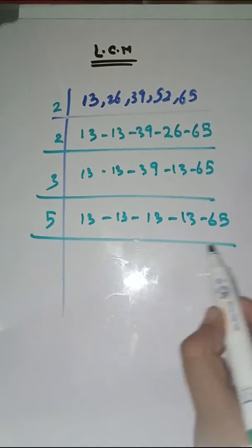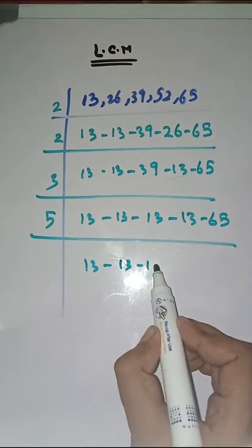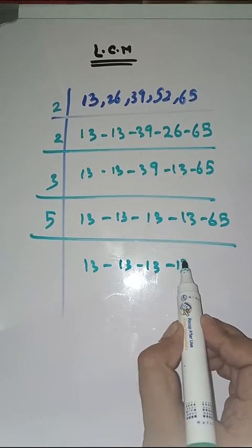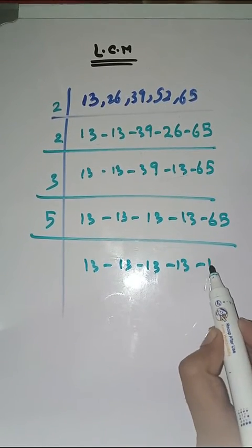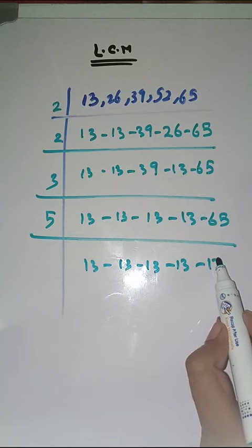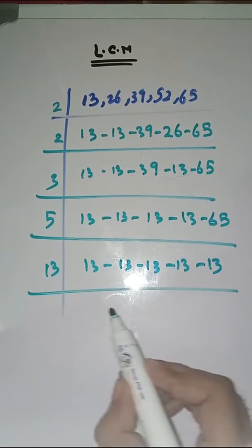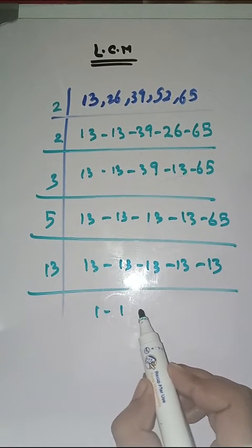Now with 5. 13 as it is. 5, 1s are 5 and 15. 5, 3s are 15. Now with 13. 13, 1s are 13.